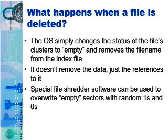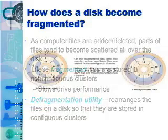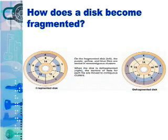As a computer writes files on a disk, parts of the files tend to become scattered all over the disk. These fragmented files are stored in non-contiguous clusters. Drive performance generally declines as read/write heads have to move back and forth to locate the clusters containing parts of the file. To regain peak performance, you can use a defragmentation utility to rearrange the files on the disk so that they are stored in contiguous clusters.